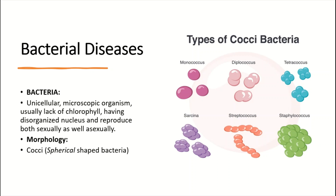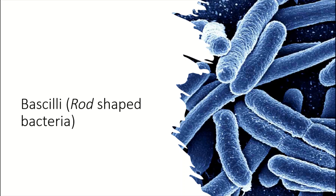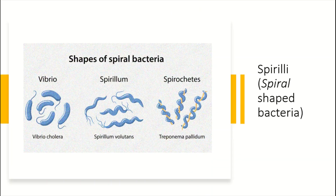Regarding morphology, cocci are spherical-shaped bacteria. These are different types of cocci bacteria. Bacilli bacteria are rod-shaped, and they reproduce mainly by binary fission. There are also spiral-shaped bacteria with different spiral forms.